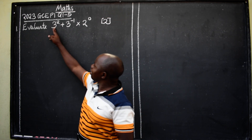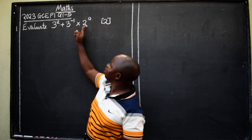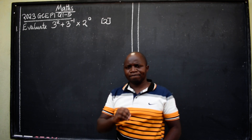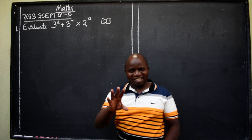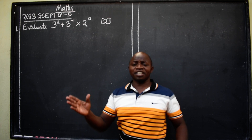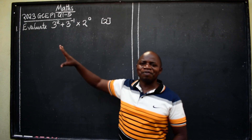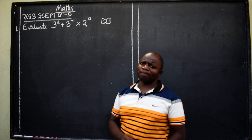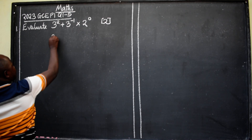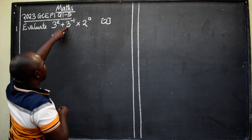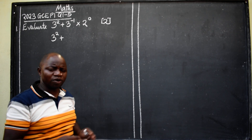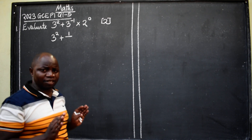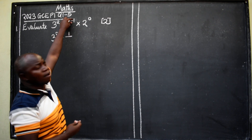Evaluate: 3 to the power 2, plus 3 to the power negative 1, times 2 to the power 0. The topic here is laws of indices. The law says: when you have a negative exponent, it means one over — you change the negative power to a positive power.